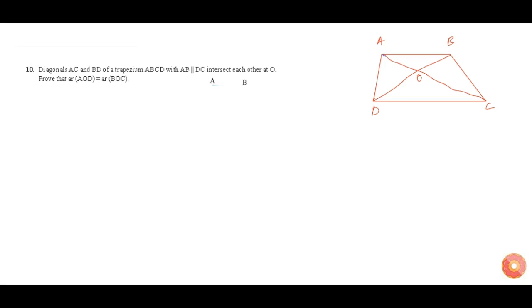Now we need to prove that area of triangle AOD is equal to area of triangle BOC. Let us consider the triangles ACD and triangle BCD.